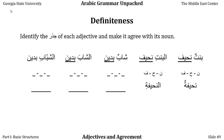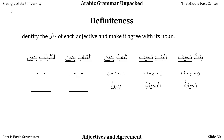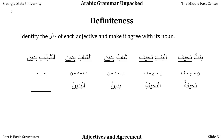Shabbun — a young man — let's make him fat with badin. Badin has the same wazn as nahif, so its jidhr is easy. Shabbun badinun, a fat young man. But if he's 'the fat young man' in the mansub or accusative case, we say alshabb — definite — so we have to make badinun definite as well: alshabb albadin, the fat young man. For the plural, shabab — guys, youths, human plural — takes the human plural ending. In the majrur case: alshabab albadinin, the fat young men.